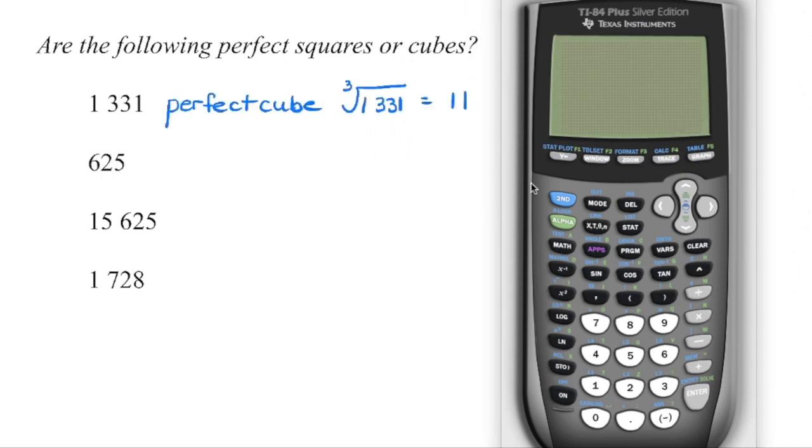So now let's check out 625. We're going to go second function, and then squared to get to the square root, and we can enter 625. Now if you need to get out of that radical sign, what you're going to do is right arrow, and then it's going to take you out. If you're using a TI-83 calculator, then you're going to close the bracket. So again, we're looking for that whole number, so we know that 625 is a perfect square.